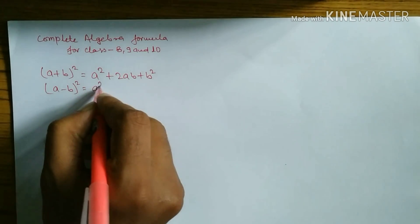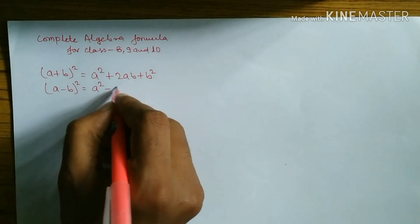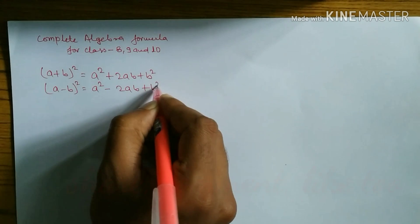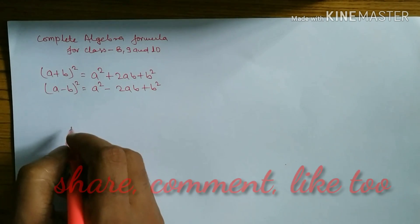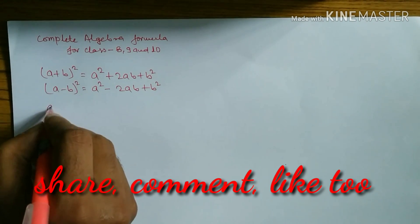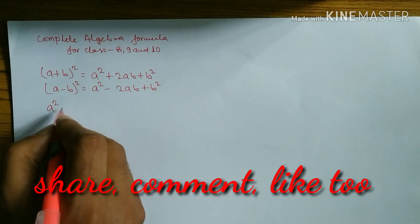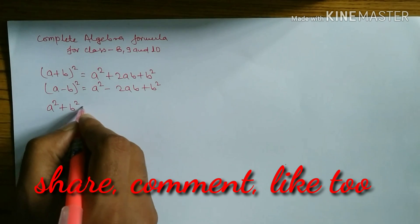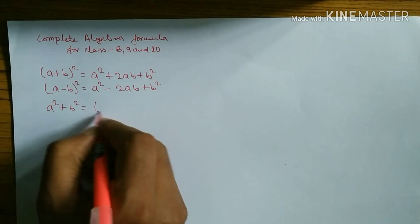The formula of (a - b)² is a² - 2ab + b². The next formula is a² + b².